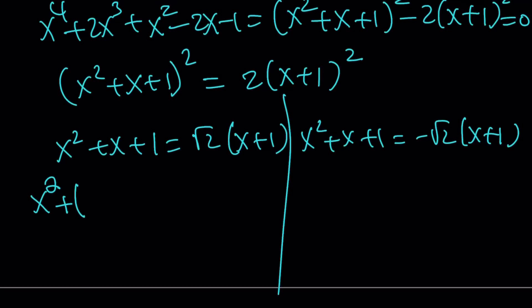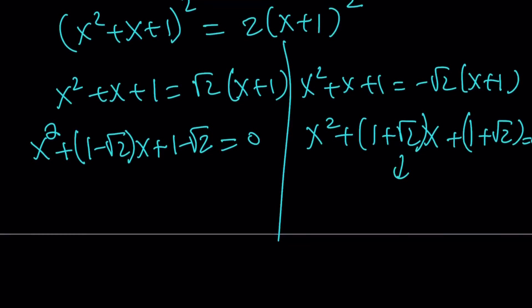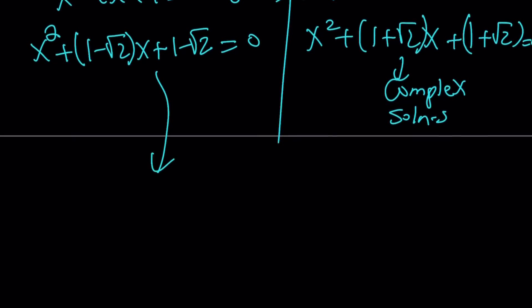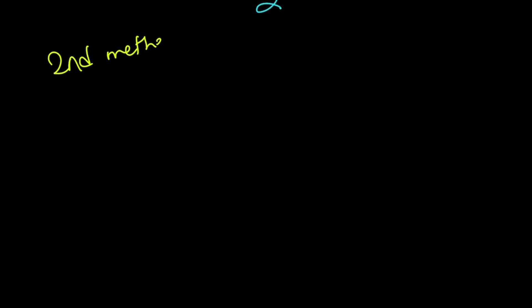Let me simplify that. The first quadratic gives x squared plus (1 minus root 2)·x plus (1 minus root 2) equals 0. The other gives x squared plus (1 plus root 2)·x plus (1 plus root 2) equals 0. Unfortunately, this second one has non-real complex solutions. The other one gives a really cool solution: x equals negative 1 plus root 2, plus or minus the square root of (2 root 2 minus 1), all divided by 2. That's Method 1. I promise Method 2 is going to be much shorter.